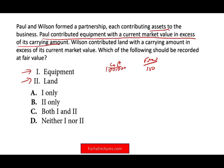When you contribute an asset to a partnership, it's recorded at fair market value — the tangible asset. Equipment and land are both tangible assets. Therefore, both are recorded at their fair market value, whatever their fair market value is.